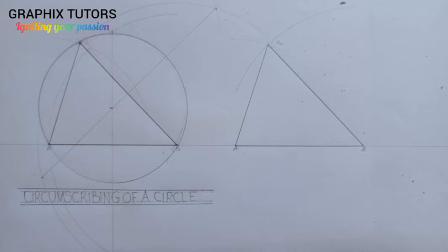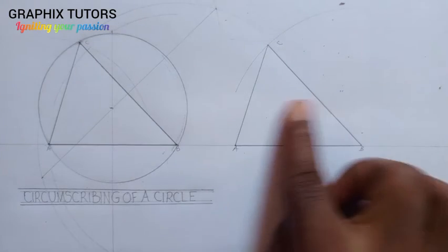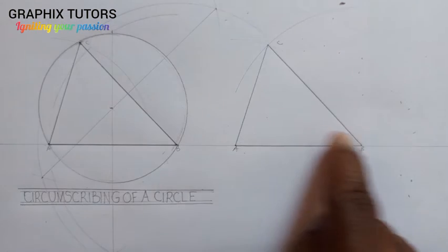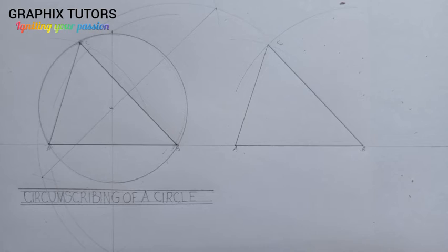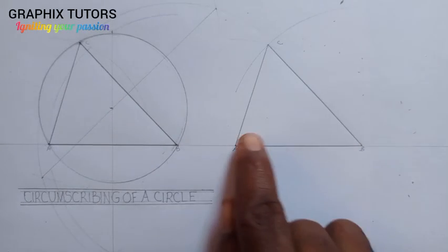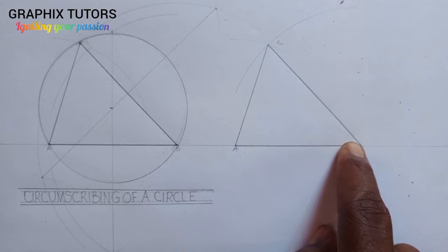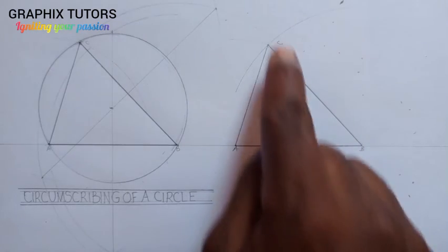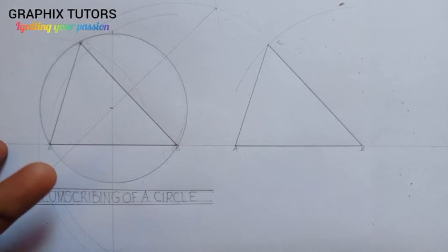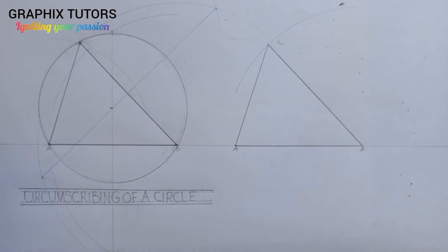Now let's look at inscribing. If you want to inscribe a circle in a triangle, what you need to bisect is any two of the three angles. You can bisect angles A and B, angles A and C, or angles B and C — unlike circumscribing where you bisect any two of the three sides.